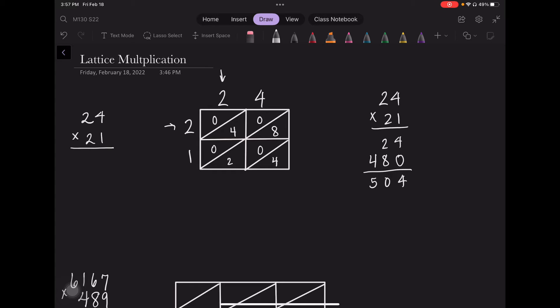Now what I do is I add my diagonals down. So I'm going to take these diagonals here to get my values. 4, 8 plus 2 is 10, so I'm going to drop my 0 and carry the 1.